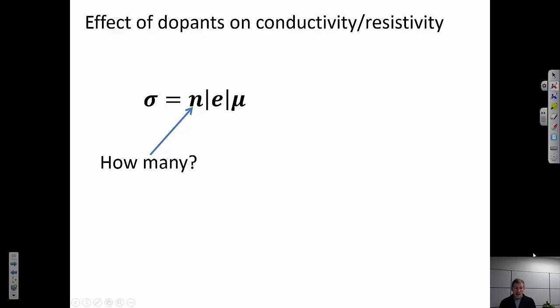Let's think about the different factors that play into overall conductivity. There are three terms to remember. First is this N term. How many? This is referring to the number of free carriers in the system. How many charged particles are there that can move around?